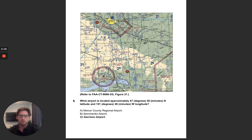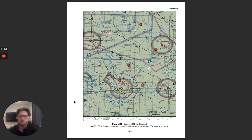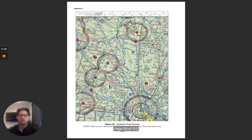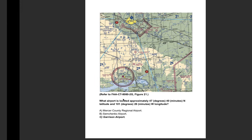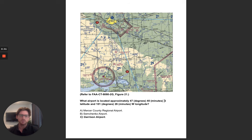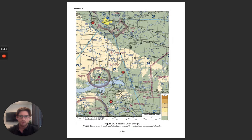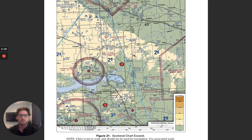Another question: what airport is located at approximately 47 degrees and 40 minutes north latitude and 101 degrees and 26 minutes west longitude? We're going to look at figure 21. It said 47 degrees and 40 minutes north — we'll start there. I see the 48 right here. Remember, the lines are depicted every 30 minutes, so going south toward the equator the number gets less, making this 47 and 30 minutes. Each of these dashes is going to be 1 minute.